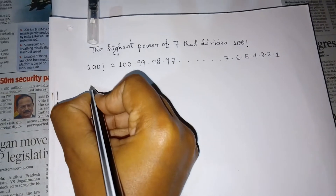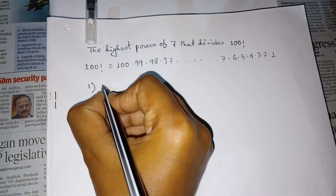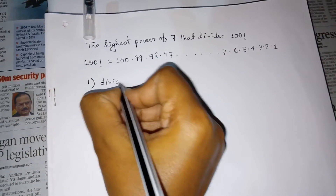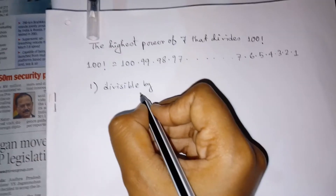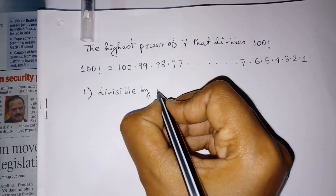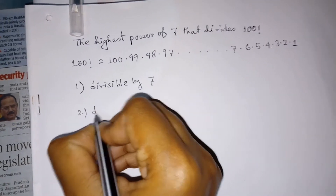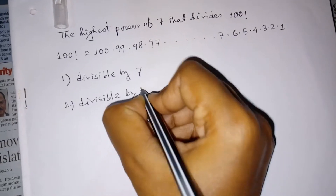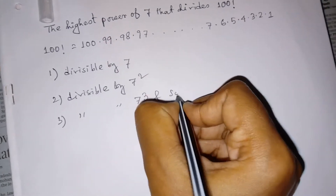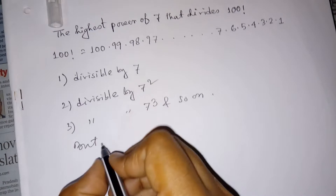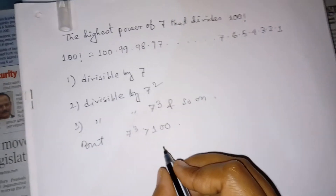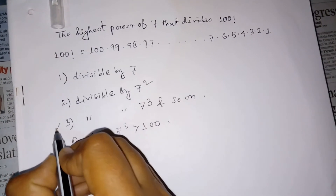To do so, we have to follow the following rules. First one is numbers which are divisible by seven. Second is the numbers which are divisible by seven square. Divisible by seven cube and so on. But it is clear that seven cube is greater than one hundred, so we only need three points and further more points are not needed.